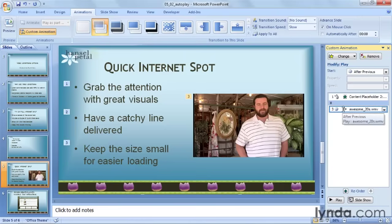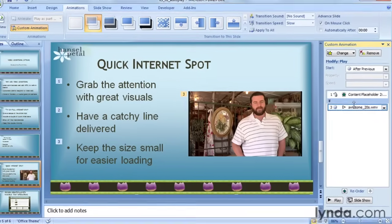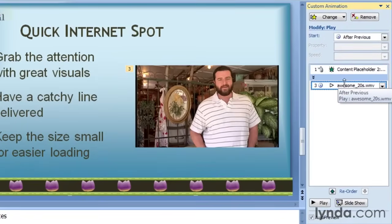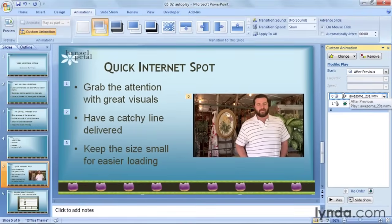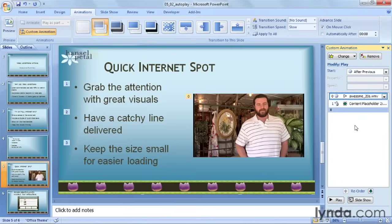Next, I want the video to come up before the bullet points. So I'm going to click on it and then hold my cursor over the upper edge until I get the double-headed arrow. I'll click and drag until I get a black bar moving up to the top of the list. Now my video is first and my bullet points are second.